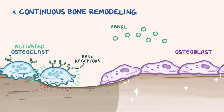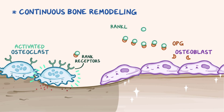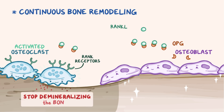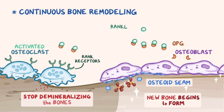Once there's been sufficient bone demineralization, the osteoblasts secrete another substance called osteoprotegerin, or OPG for short, which binds RANK-L and prevents it from activating the RANK receptors. This causes the osteoclasts to stop demineralizing the bones. Once that happens, the osteoblasts start secreting a substance called osteoid seam, which is mainly made up of collagen, and acts like a scaffold upon which calcium and phosphate can get deposited. And that's how new bone begins to get formed again.